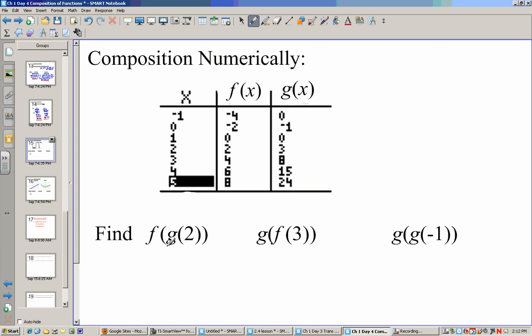Now if we do this numerically, this is using a table. We do the same thing. We start with g(2) first. If x is 2, g(2) is 3. So now I'm looking for f(3). So if x is 3, my f(x) will be 4. So that answer will be 4. And over here, if I have g(f(3)), f(3), if x is 3, f is 4. So now I have g(4). If x is 4, my g is 15.